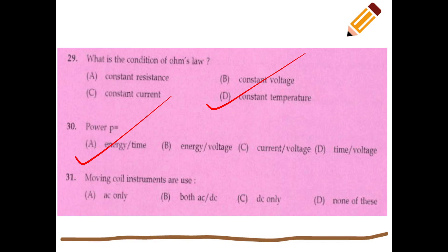Moving coil and moving iron instruments: moving iron can measure both AC and DC, while moving coil instruments measure DC only.